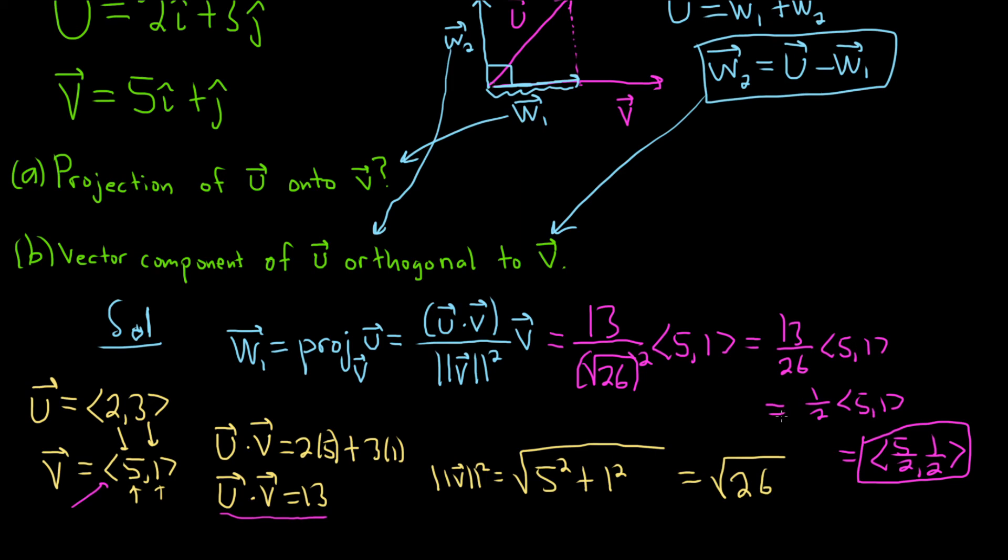For part b, all we have to do is subtract. So we just have to do u minus w1. It's this formula here. This is the vector component of u orthogonal to v. You see it here in the picture.